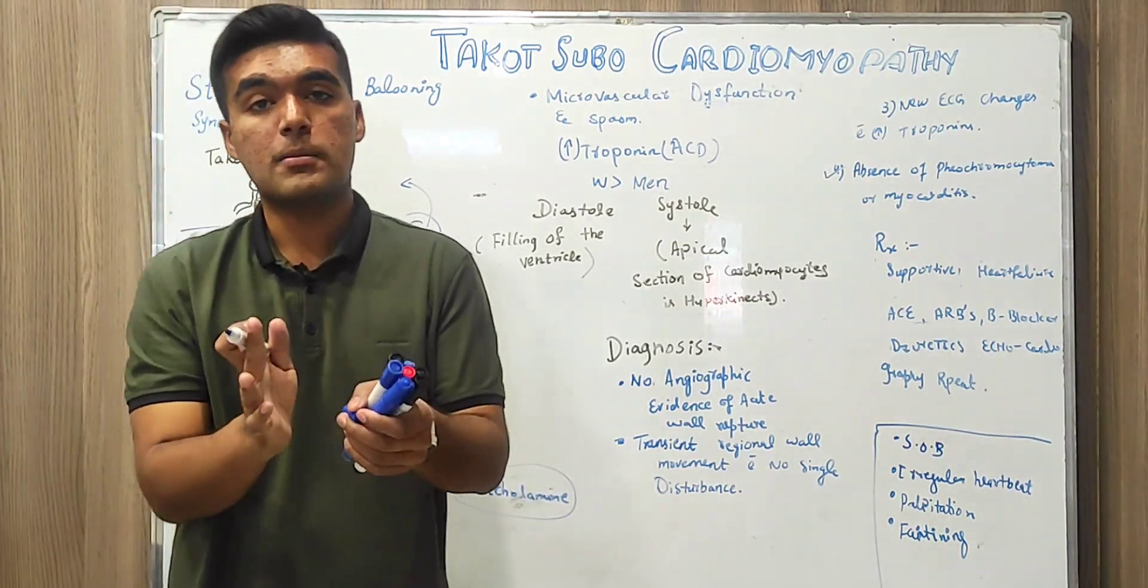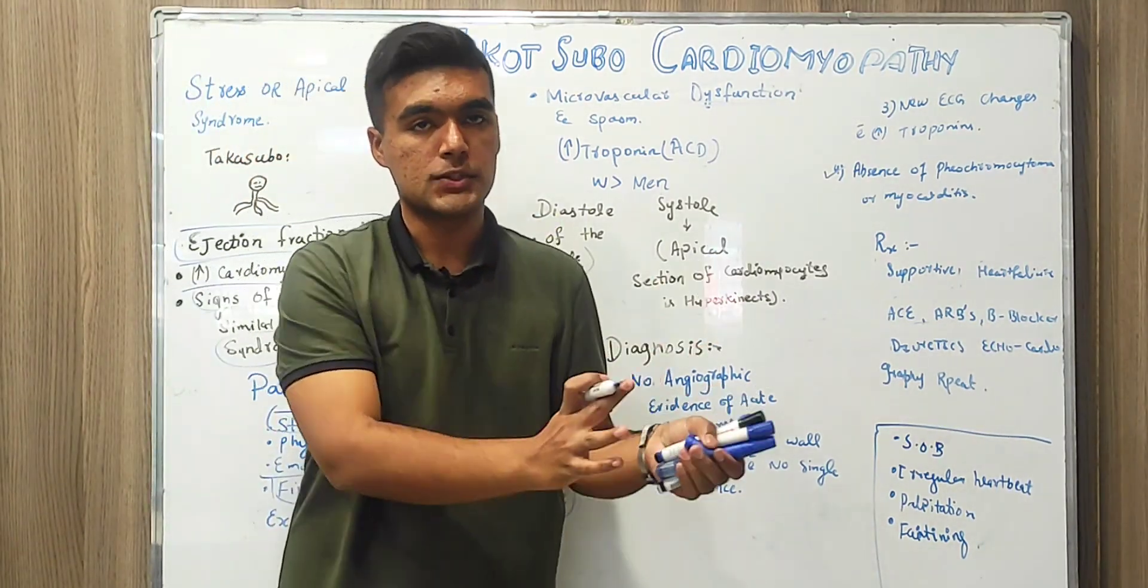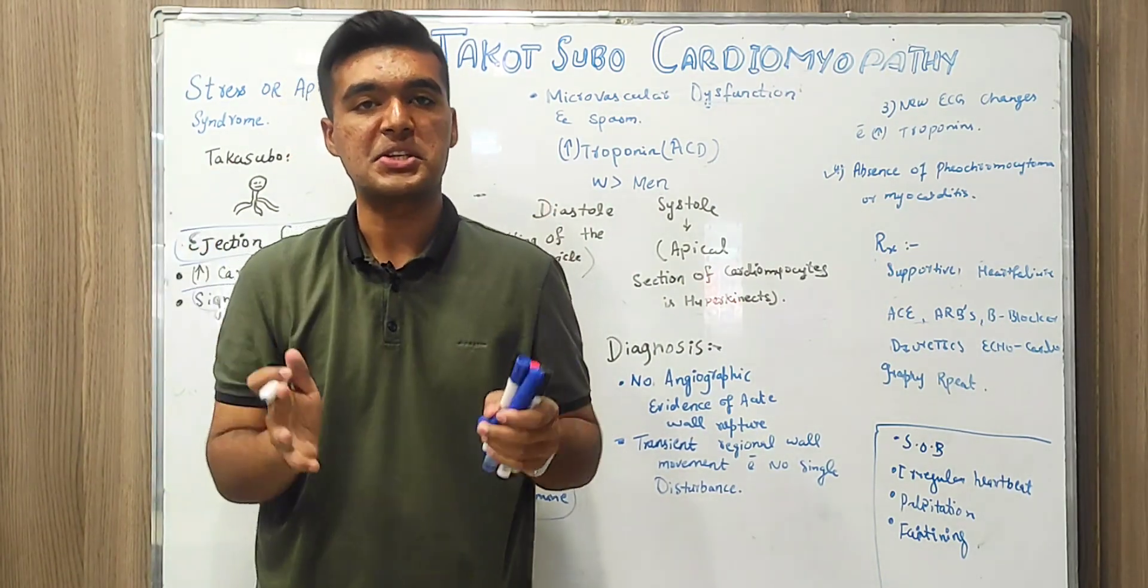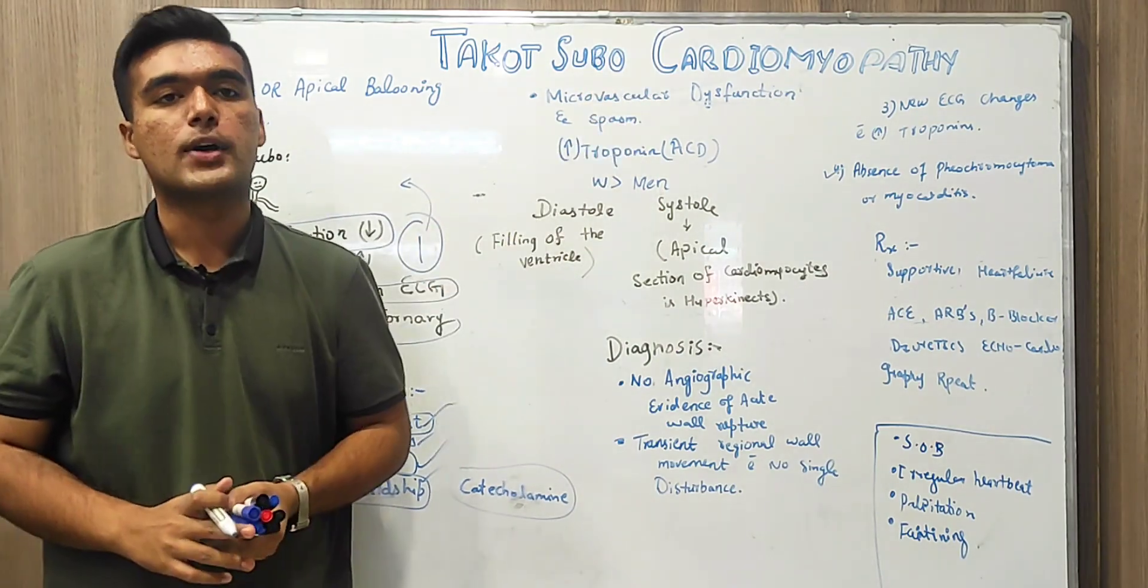Catecholamine excess, catecholamine is relevant to motor functions. So if excess catecholamine occurs, there is an abnormality in motor functions which basically takes us to the condition of Takotsubo Cardiomyopathy.